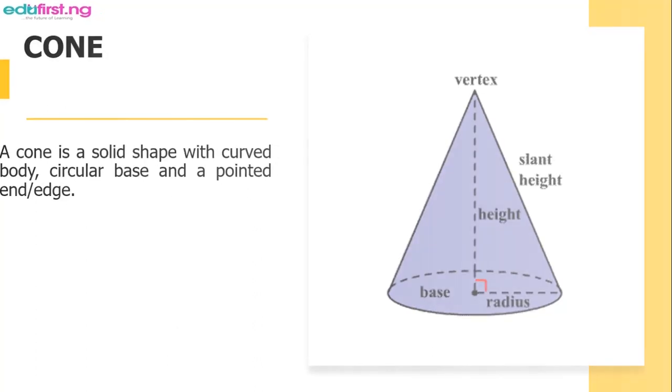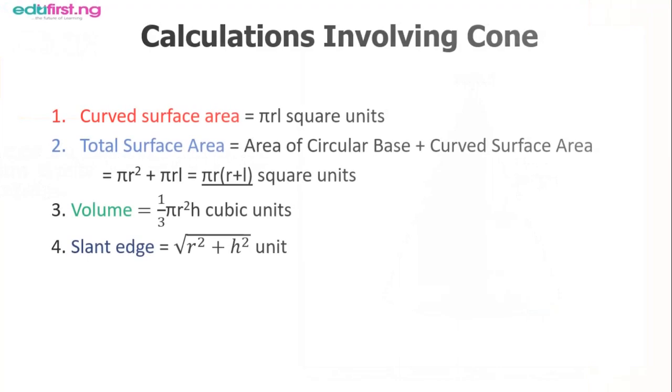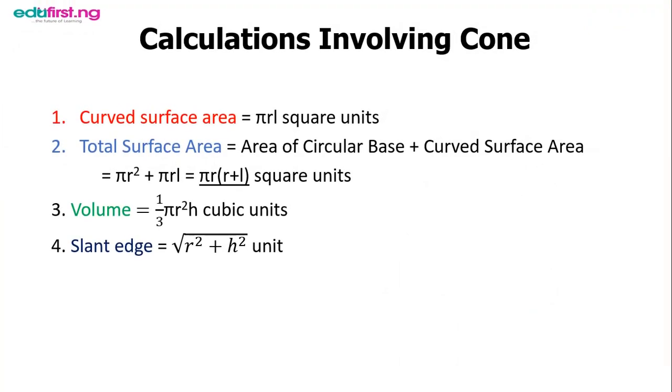What are the calculations? There are four calculations here. The first one is the curved surface area, and the formula is πrl. Don't forget that at the end of every calculation you must always include the square units.